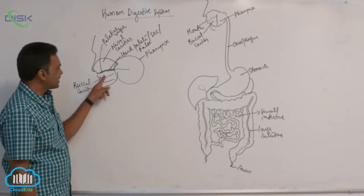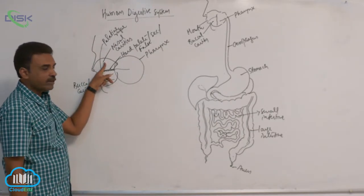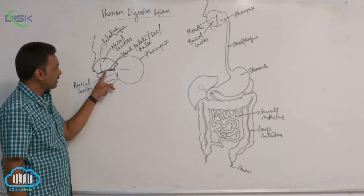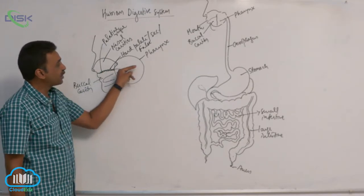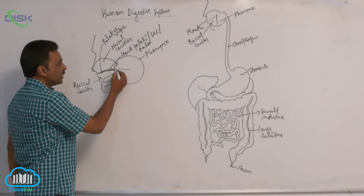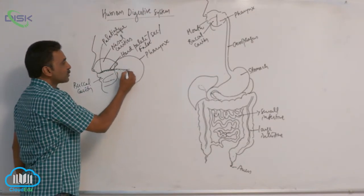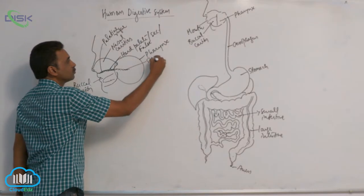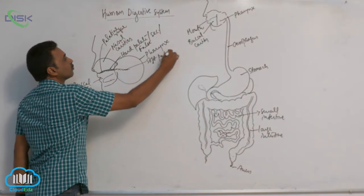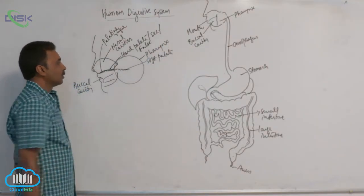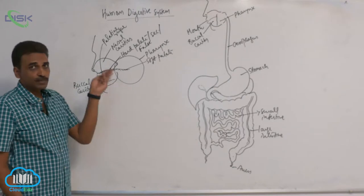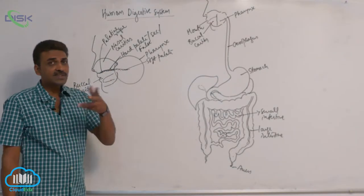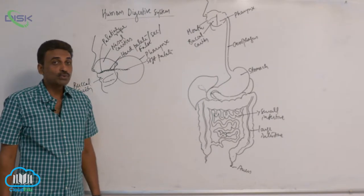The buccal cavity and nasal cavities are both separated by the hard palate. The hard palate continues backwards as the soft palate. The soft palate does not contain bones.